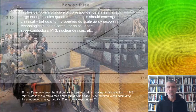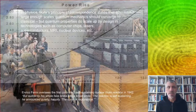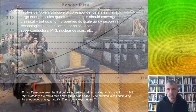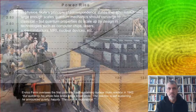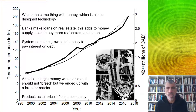In physics, Bohr's principle of correspondence states that at large enough scales quantum mechanics should converge to classical. But things like nuclear devices don't wash out, and quantum properties have been scaled up by design through technologies such as computer chips, lasers, superconductors, and so on, which make up much of our economy today. This picture shows Enrico Fermi overseeing the first controlled self-sustaining nuclear chain reaction in 1942. The reaction is self-sustaining, he announced — happily — the curve is exponential.